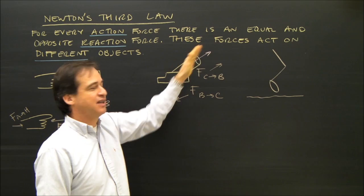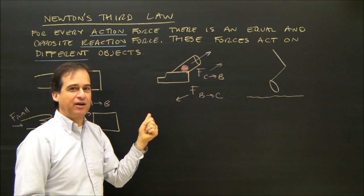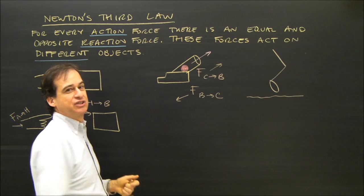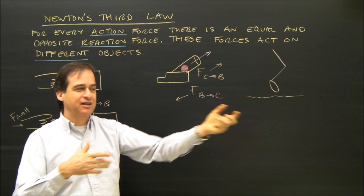So there's a force on the cannonball, it accelerates the cannonball, and the cannonball goes out that way really quickly. That same force is acting back on the cannon, and because the cannon is so much heavier than the cannonball, its acceleration is a lot less.